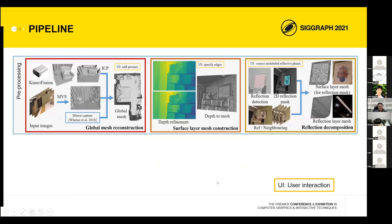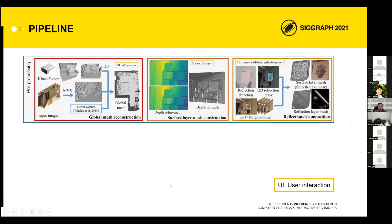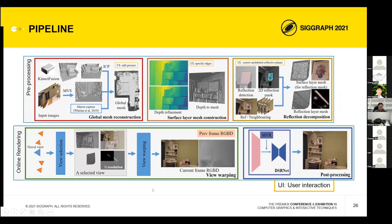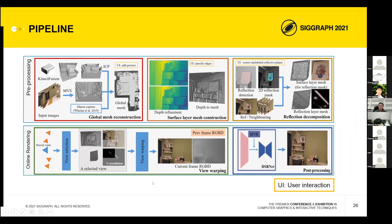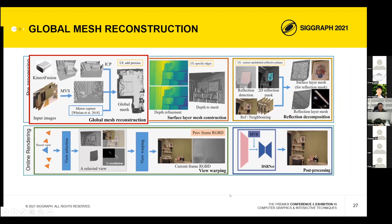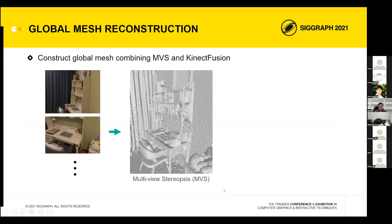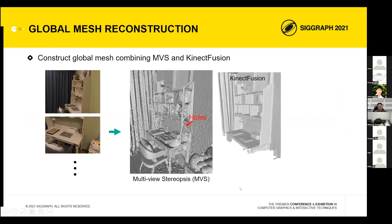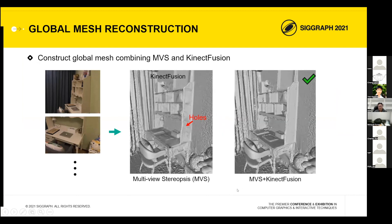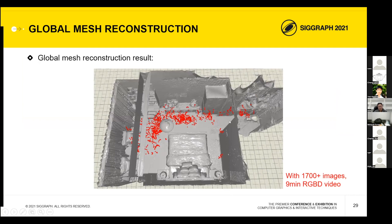This is our pipeline. The first stage is geometry processing: we do per-view geometry processing and construct the two-layer mesh. For global mesh reconstruction, we use multi-view reconstruction and KinectFusion to reconstruct geometry. There are some holes in textureless areas, so we use KinectFusion to improve quality. The second step is to refine the depth at each view to align geometry edges with image edges, reducing tearing or ghostly effects in view blending.